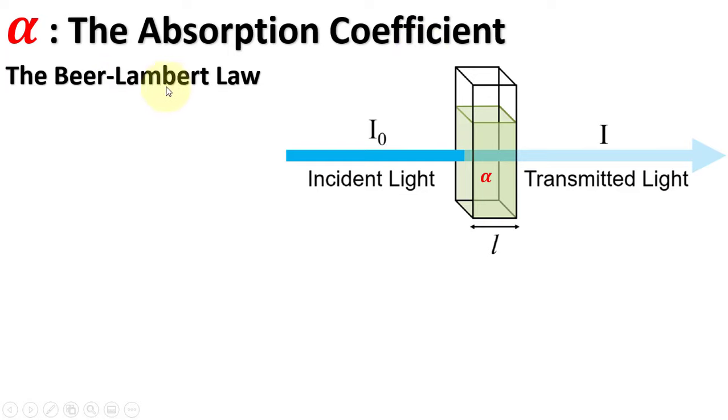According to the Beer-Lambert law, the transmitted intensity is equal to the exponentially decaying incident intensity. We can rearrange the equation and put x equals L, which is the thickness of the solution through which the intensity is passing. Here it is the standard length of a cuvette.